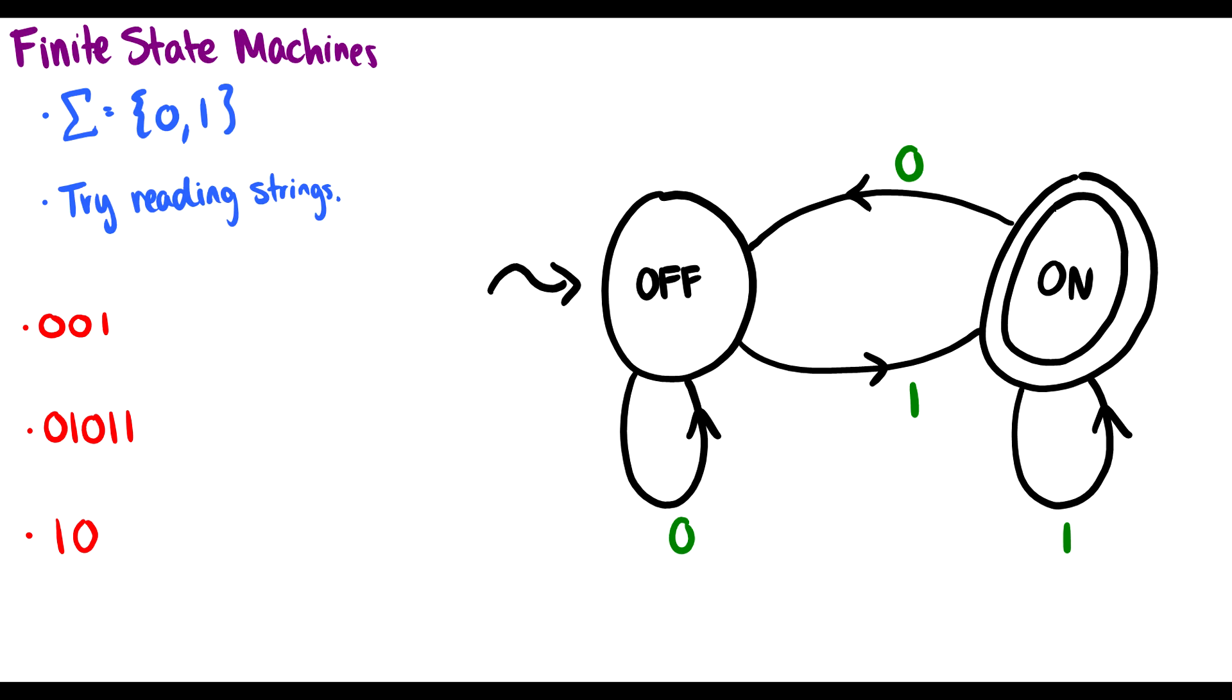I want to read 001. Where do I start? We look for this squiggly arrow, which is sometimes just a triangle pointing towards the starting state. This is where we start reading. I'm going to put my pen in the center here and I'm going to follow the directions. I see some arrows and I see some numbers. If I take the string 001, first I start at 0 and I read 0 and it tells me to loop. Then I read 0 as the second symbol and I loop again. For the third symbol, I read 1 and it takes me to the on switch. So I end at on.